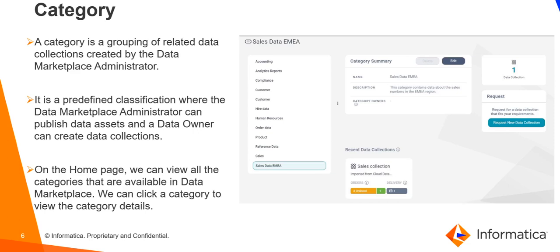Now let us cover categories in Cloud Data Marketplace. A category is a grouping of related data collections created by the data marketplace administrator. It is a predefined classification where the data marketplace administrator can publish data assets and a data owner can create data collections. In the Cloud Data Marketplace UI, on the homepage, we can view all the categories that are available in data marketplace. We can click on a category to view the category details, as shown in the image on the right.